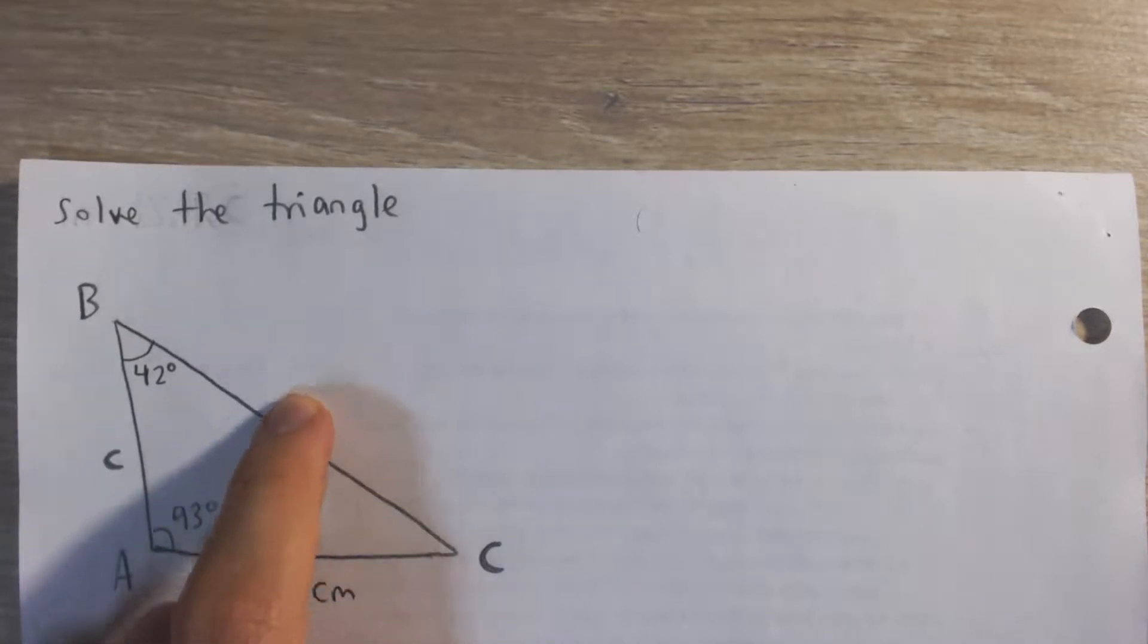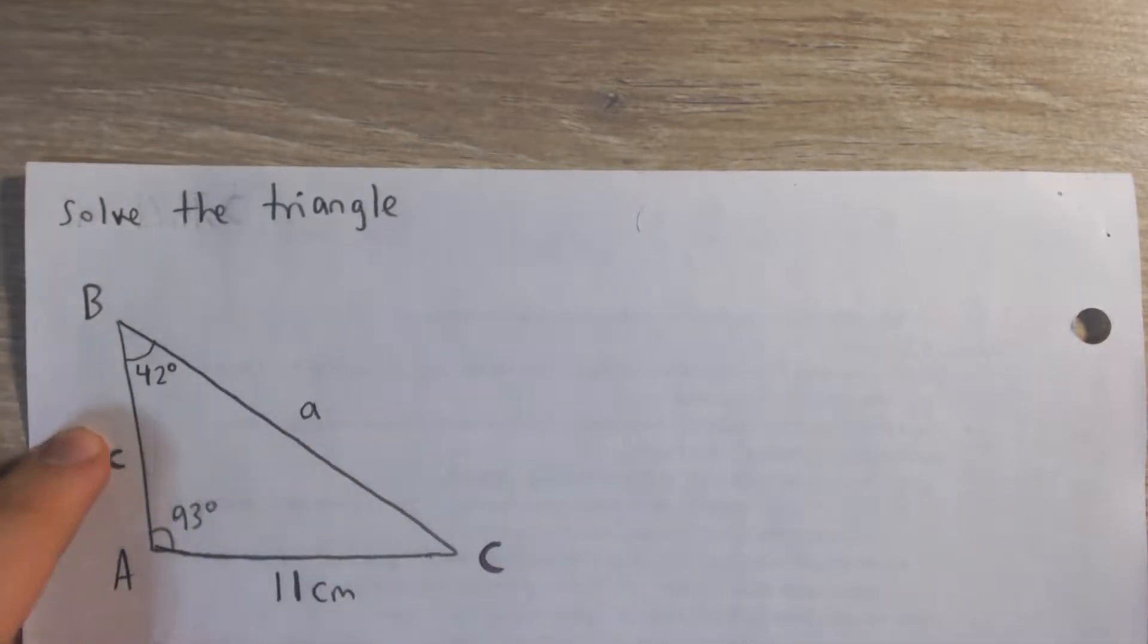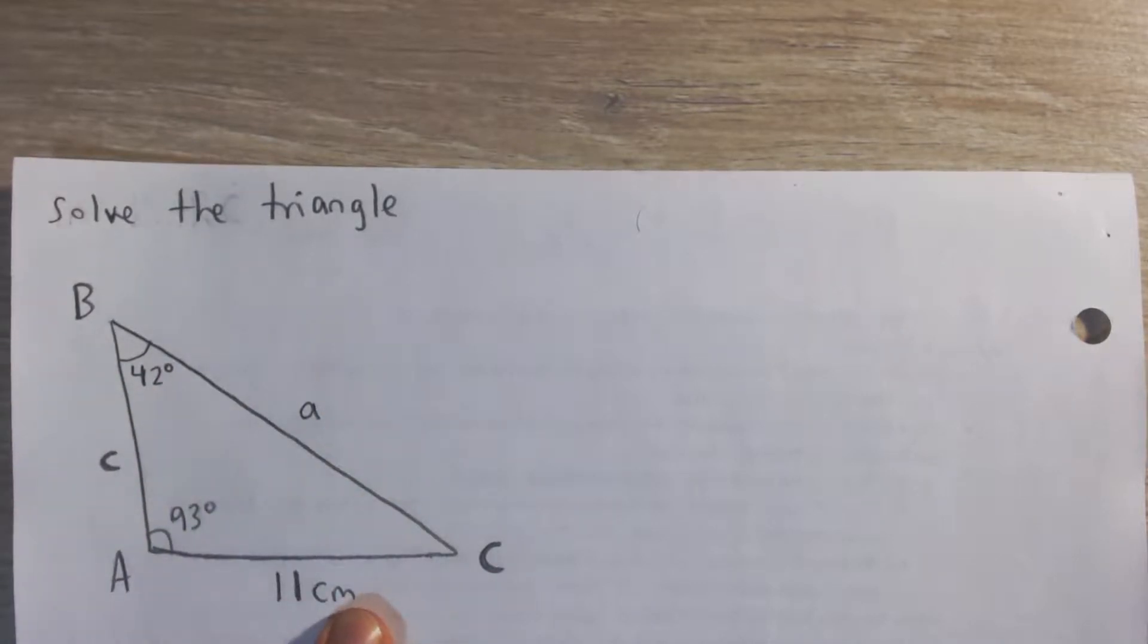In other words, opposite of angle A, we have side a, opposite of angle C, we have side c, and opposite of angle B, we have side b.